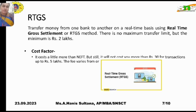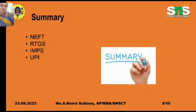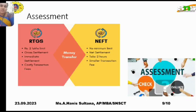Certain private sector banks charge extra depending on the transaction time and amount. For public sector banks, the maximum transfer limit is 2 lakhs and the amount is transferred within 24 hours for NEFT. To summarize: RTGS has a minimum limit of 2 lakhs and offers immediate — real-time — gross settlement, whereas NEFT has no minimum limit and uses net settlement, taking approximately two hours for the transfer.